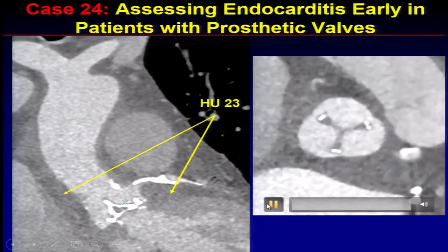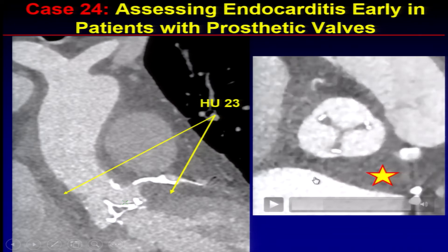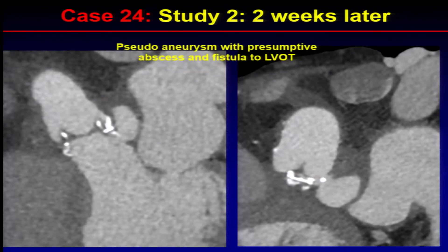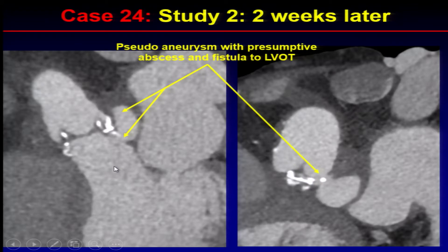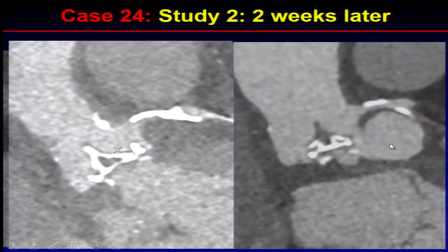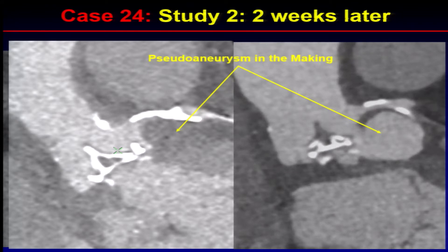The valve itself functioned completely normally, but you'll notice this area is very white with a lot of attenuation. This patient was treated with antibiotics but didn't get better and came back two weeks later, now with a pseudoaneurysm and a paravalvular leak into the LVOT. So we started with just a little bit of fluid collection and ended up with a pseudoaneurysm in the making.